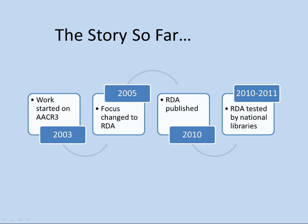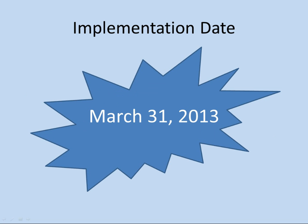RDA was tested by the National Libraries — the Library of Congress, the National Library of Medicine, and the National Agricultural Library — plus about 25 to 26 test partners. They tested RDA and made recommendations for changes. After that, the National Libraries announced they would implement RDA. The first announcement said no earlier than January 2013, but eventually a firm implementation date of March 31st, 2013 was set — just a few days away now. So regardless of what you choose to do for original cataloging, you'll start seeing many more RDA records coming in if you're copy cataloging.